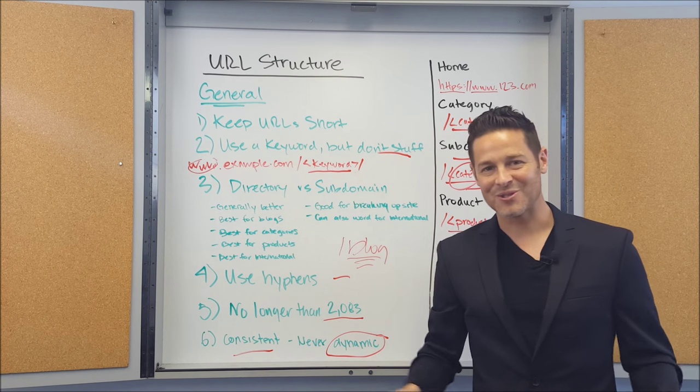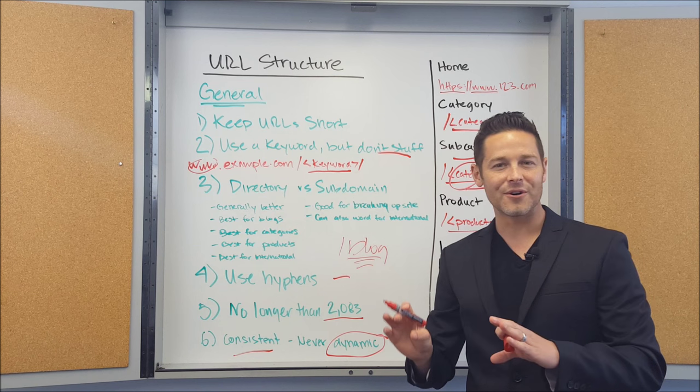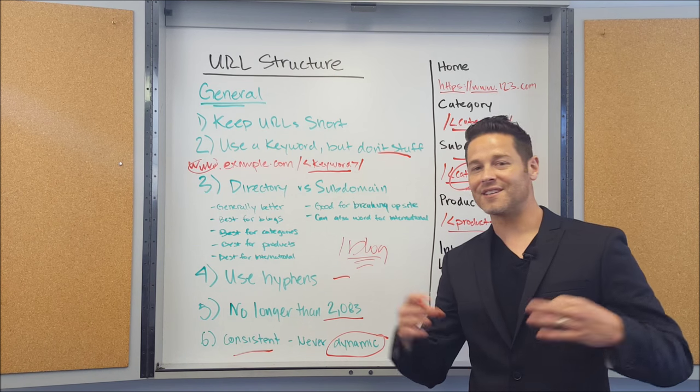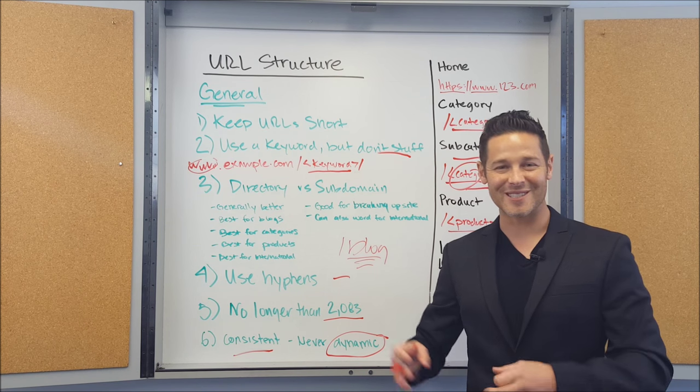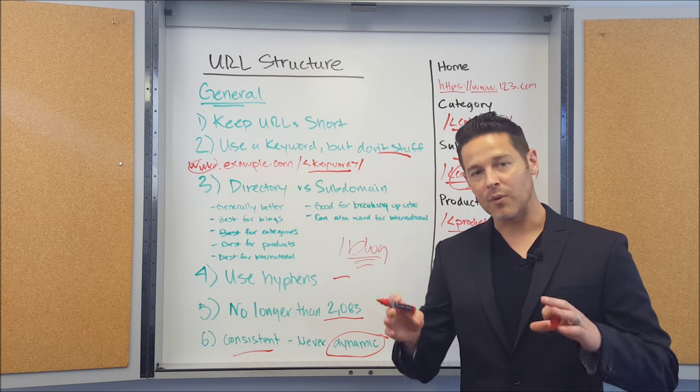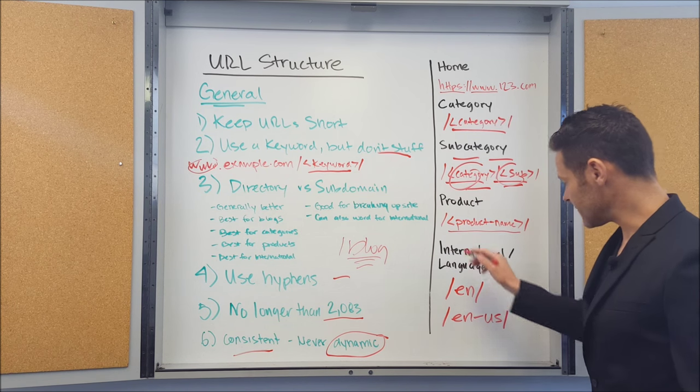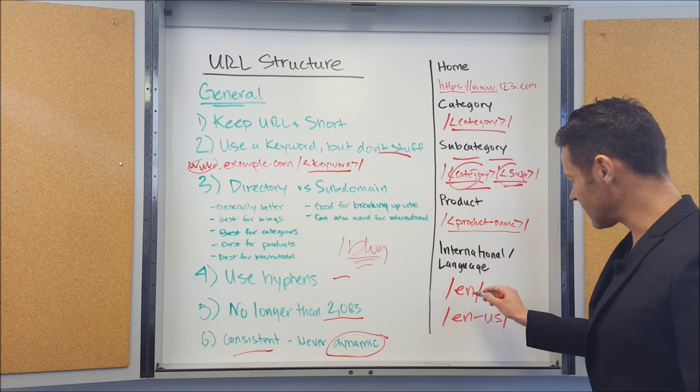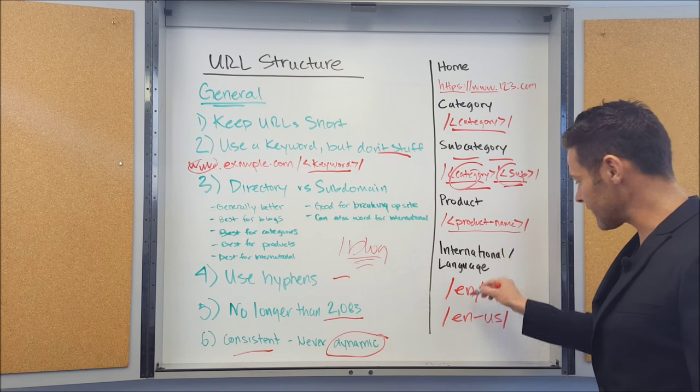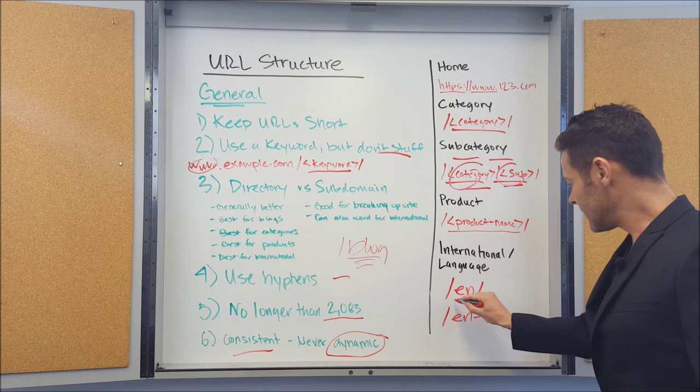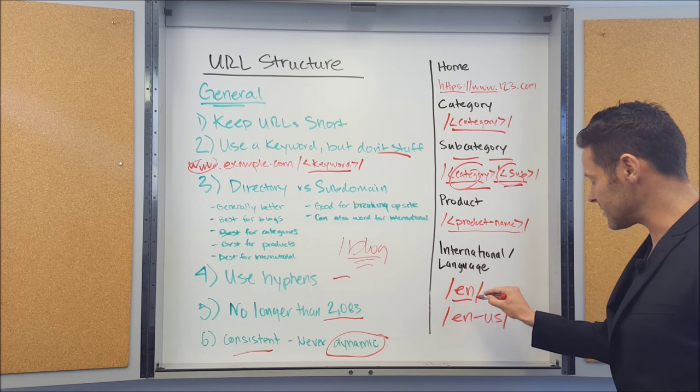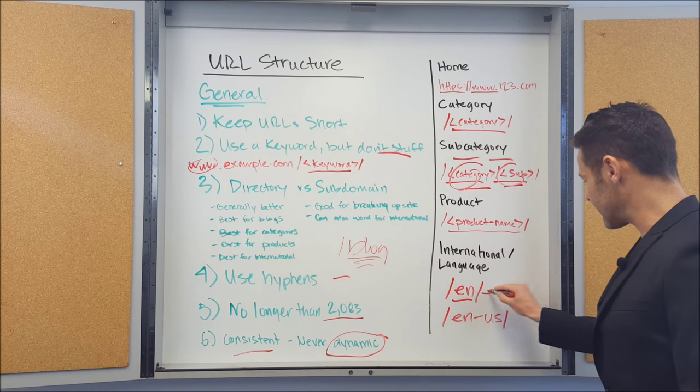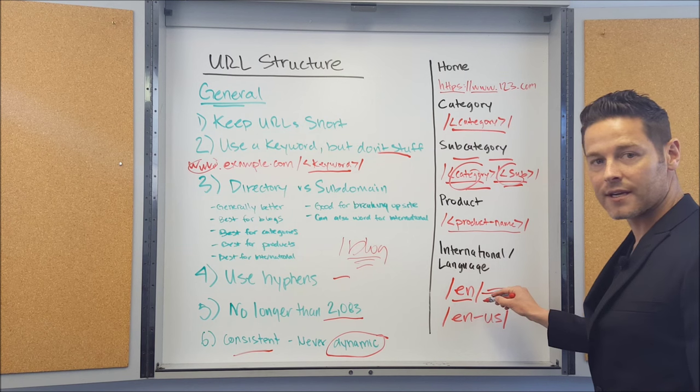Okay. So last thing on URL structures for today, just a brief note about international. I'm not going to get all into international and multilingual SEO because it's a big topic. We'll do another video on that. But what I do want to talk to you about is when you're structuring your URLs, if you're going to have an English version, a French version, a Spanish version, then you're going to want to put that into URL structure. And then everything else comes after all this other stuff comes after that.